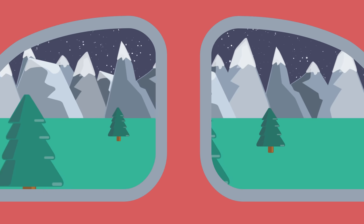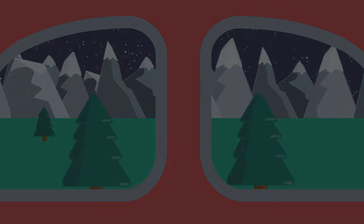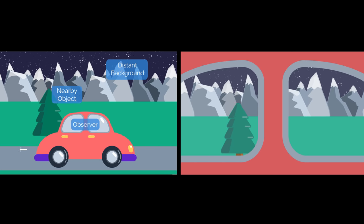As you move, objects closer to you, such as the trees, seem to shift position relative to more distant objects, like the mountains. This effect is called parallax.